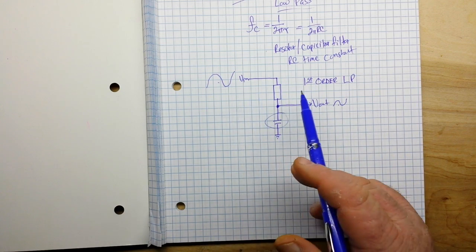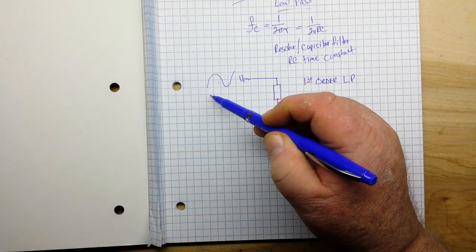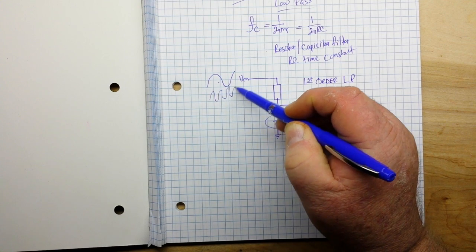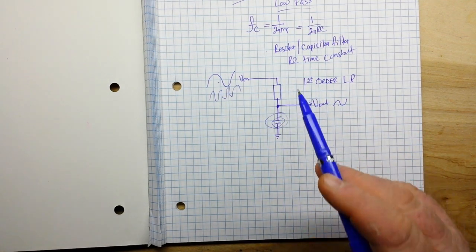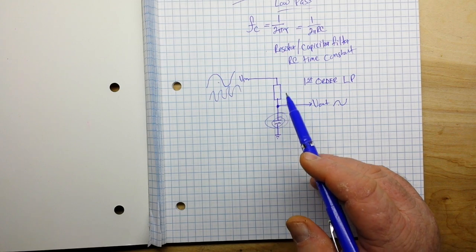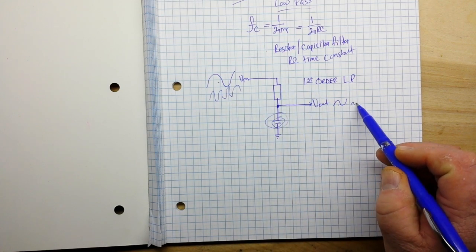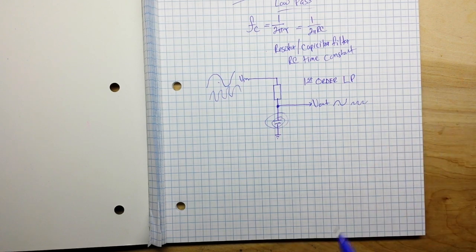Now, at higher frequencies, because we're oscillating faster, there's not enough time for this capacitor to charge up to the input frequency, or the input voltage, and what we get out is severely attenuated. Let's take a look at building one of these practically on a breadboard.